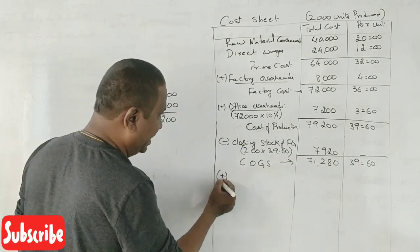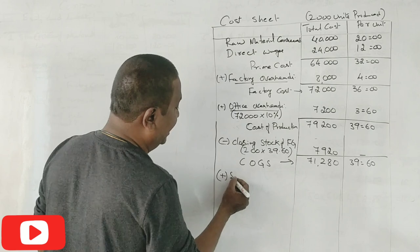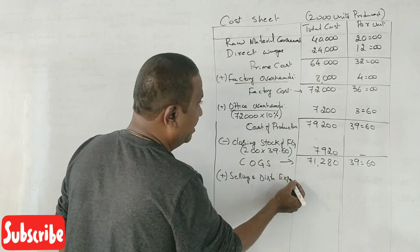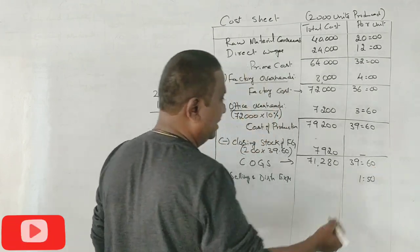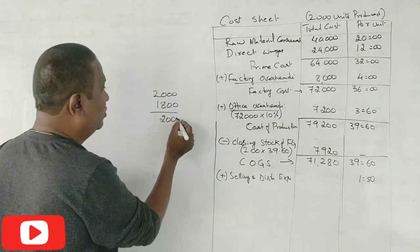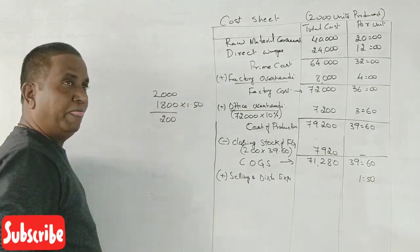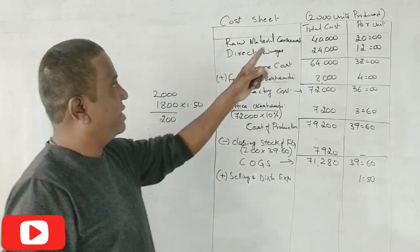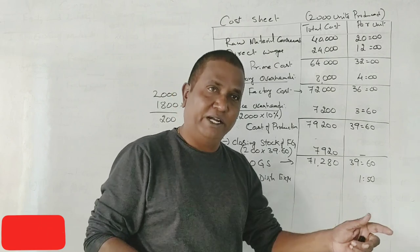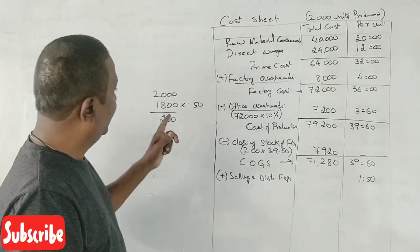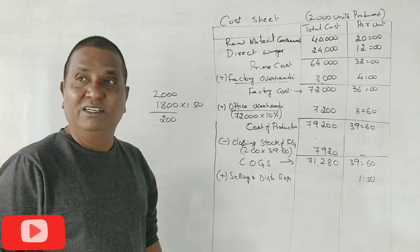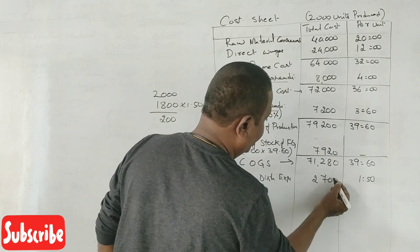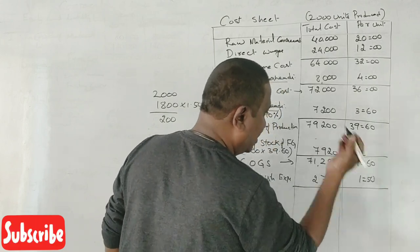To this we should add selling and distribution expenses. Per unit is 1.50 into 1,800 units - because how many units we sold? Selling expenses, so number of units sold, not produced. 1.50 into 1,800 equals 2,700.